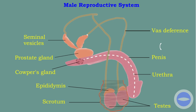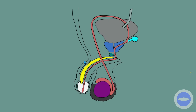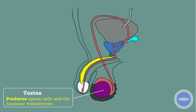On the next slide, this is the structure of the male reproductive system. I will use this structure to explain the function of each part. First of all, I will start with the testis. The function of the testis is to produce sperm cells, and it also produces the hormone called testosterone. Let me discuss how the testis produces sperm cells and the hormone testosterone.